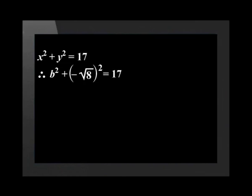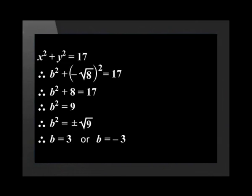This gives us b squared plus (negative square root of 8) squared equals 17. Multiply out the brackets and we now have b squared plus 8 is equal to 17. Therefore, b squared is equal to 9. To find the value of b, we will square root both sides of the equation. Remember that whenever we square root like this, we will have two possible answers, one positive and one negative. Therefore, b is equal to 3 or negative 3.